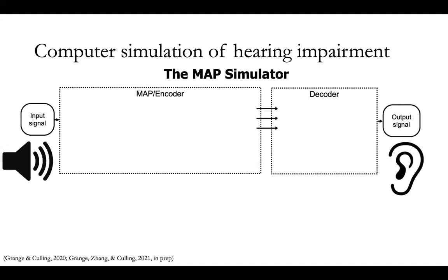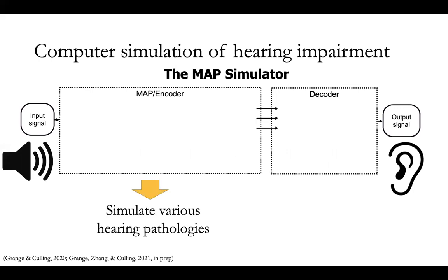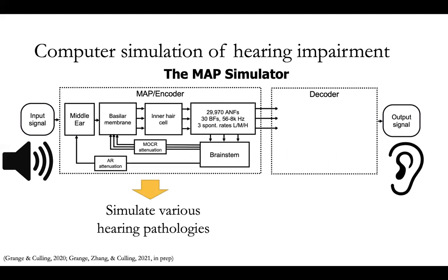Here we use something called the MAP simulator. The MAP simulator includes an encoder bit and a decoder bit. The encoder bit was developed by Professor Ray Meddis and was used to simulate different hearing pathologies. It contains a physiologically detailed model of the auditory periphery, all the way from the middle ear into the lower brain stem, including the efferent reflexes. We used all 30,000 auditory nerve fibers, spanned across 30 best frequencies from 56 to 8,000 Hz, across three spontaneous rates.